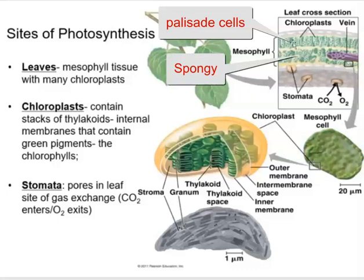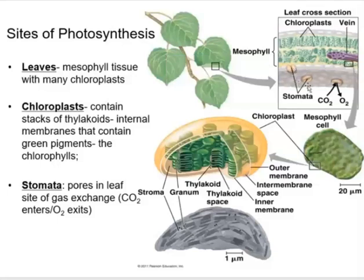Then there are less tightly compacted cells with lots of little air pockets, called the spongy mesophyll. All of these cells overall contain lots of chloroplasts. Another important structure here is stomata — little pores that can be open or closed, allowing for gas exchange. They are found mainly on the underside of leaves, where carbon dioxide diffuses in and oxygen diffuses out.